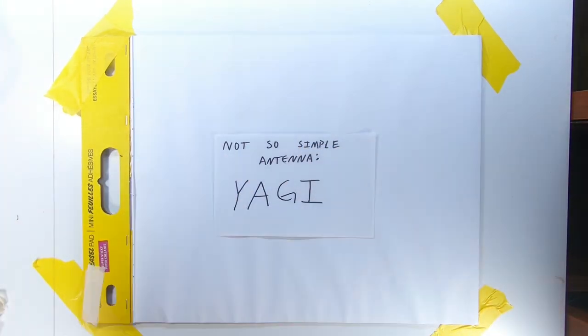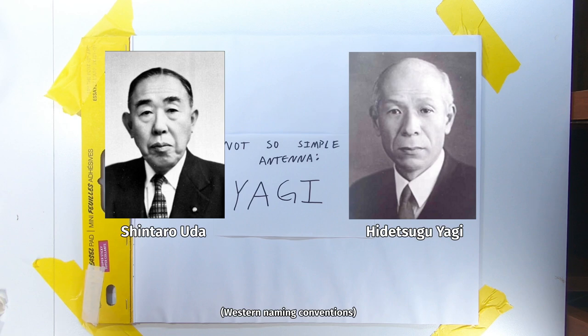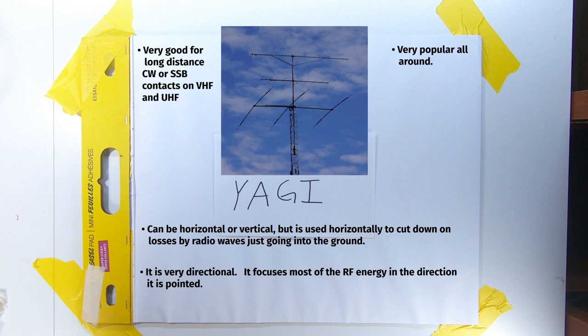A not-so-simple antenna is called a Yagi or Yagi-Uda antenna, named for Hidetsugu Yagi and Shintaro Uda, two 20th-century electrical engineers from Japan. These antennas are very popular full stop, but these antennas are very popular specifically for long-distance communication using CW and single sideband on VHF and UHF, and they are really popular for the HF bands. This is because the Yagi is a beam antenna. It is strongly directional, able to focus its RF power in the direction it is pointed. A Yagi antenna can be rotated into a horizontal or vertical polarization, but most are configured for horizontal polarization to prevent ground losses.